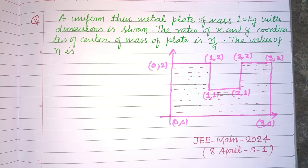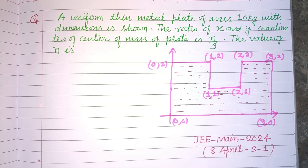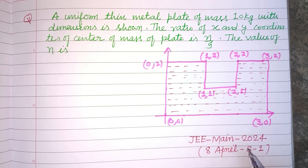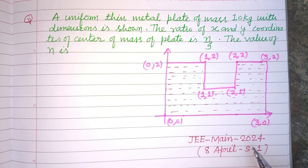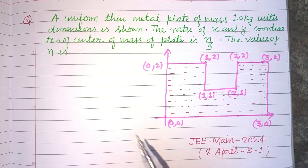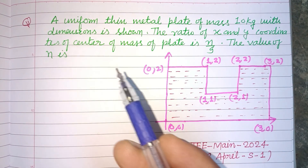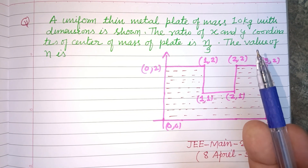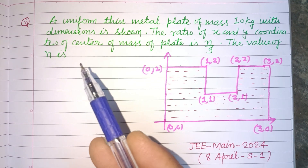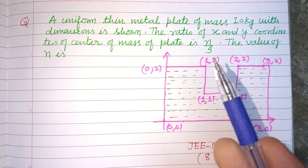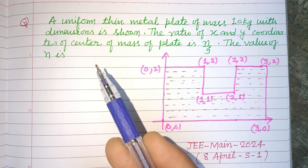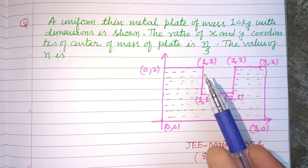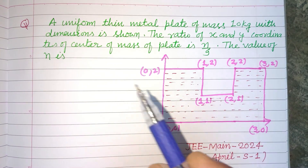Hello viewers, warm welcome to this YouTube channel. This is a question from JEE Main 2024, April 8. A uniform thin metal plate of mass 10 kg with dimensions shown. The ratio of x and y coordinates of the center of mass of the plate is n by 9. Find the value of n.